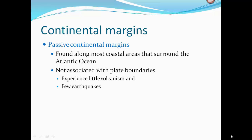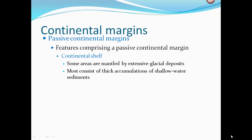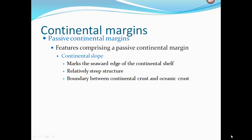Continental margins can be passive or active. Passive margins are found along most coastal areas surrounding the Atlantic Ocean. They are not associated with plate boundaries, experience very little volcanism, and few earthquakes. Features include the continental shelf — a flooded extension of the continent that varies in width, is gently sloping, and contains oil and important mineral deposits. Some areas are mantled by glacial deposits; most consist of thick shallow-water sediment accumulations. The continental slope marks the seaward edge of the shelf, is a relatively steep structure, and represents the boundary between continental and oceanic crust.